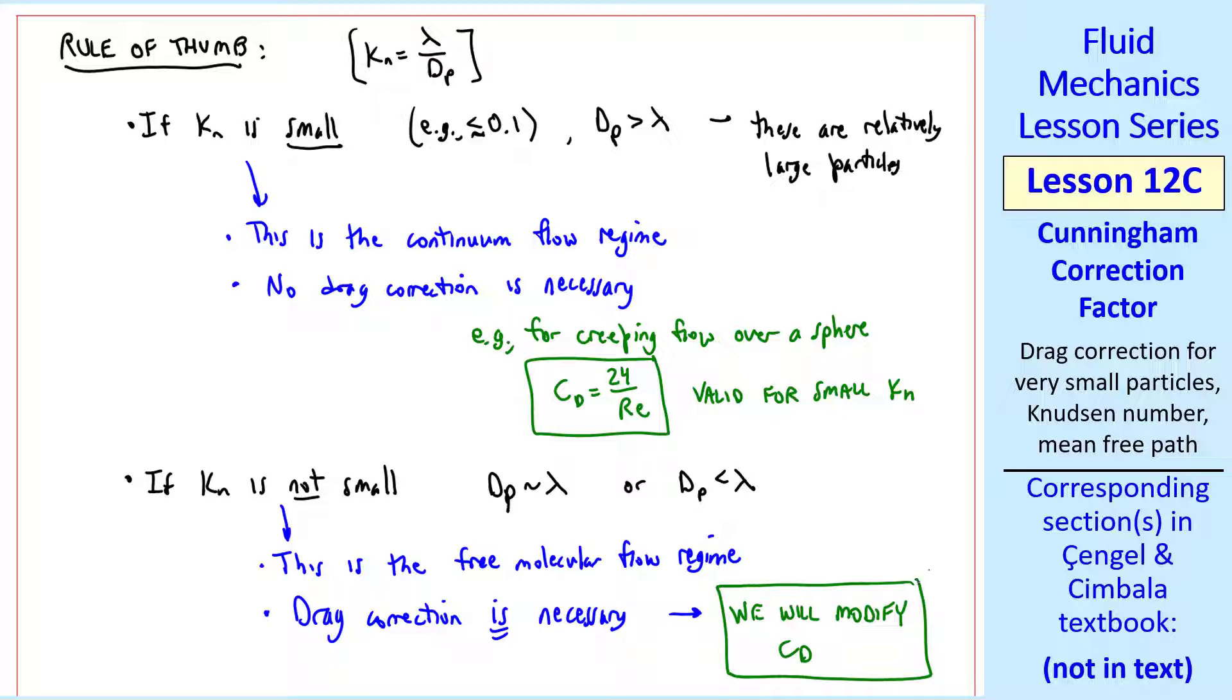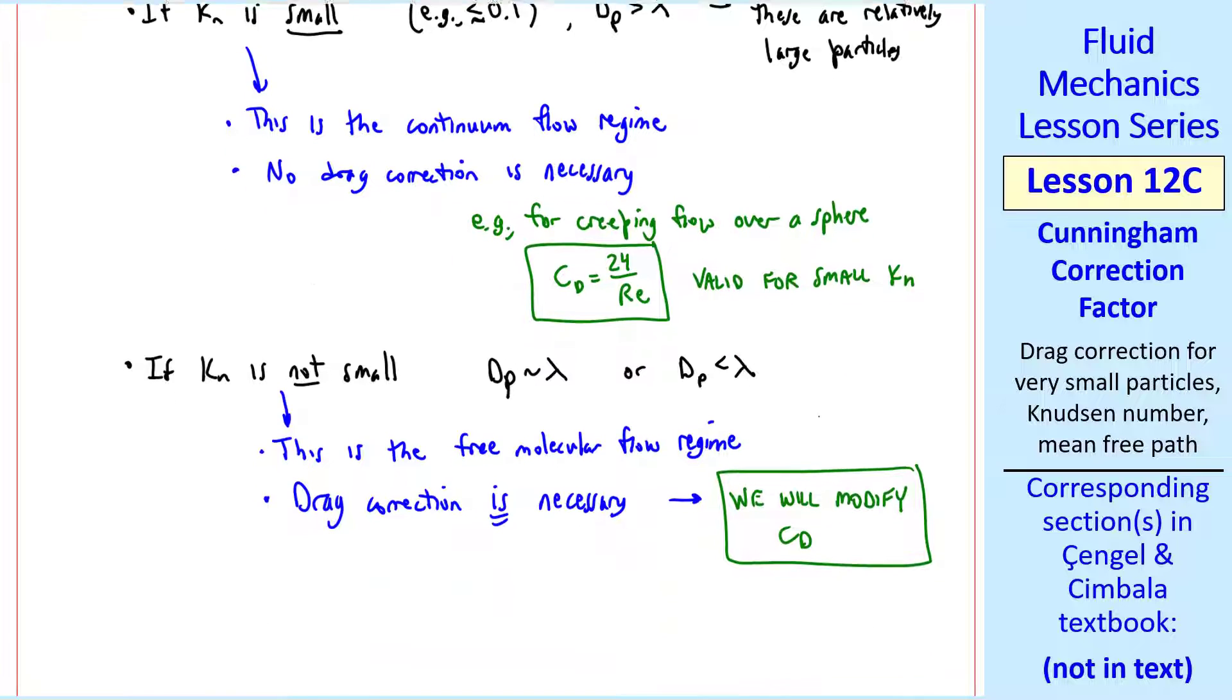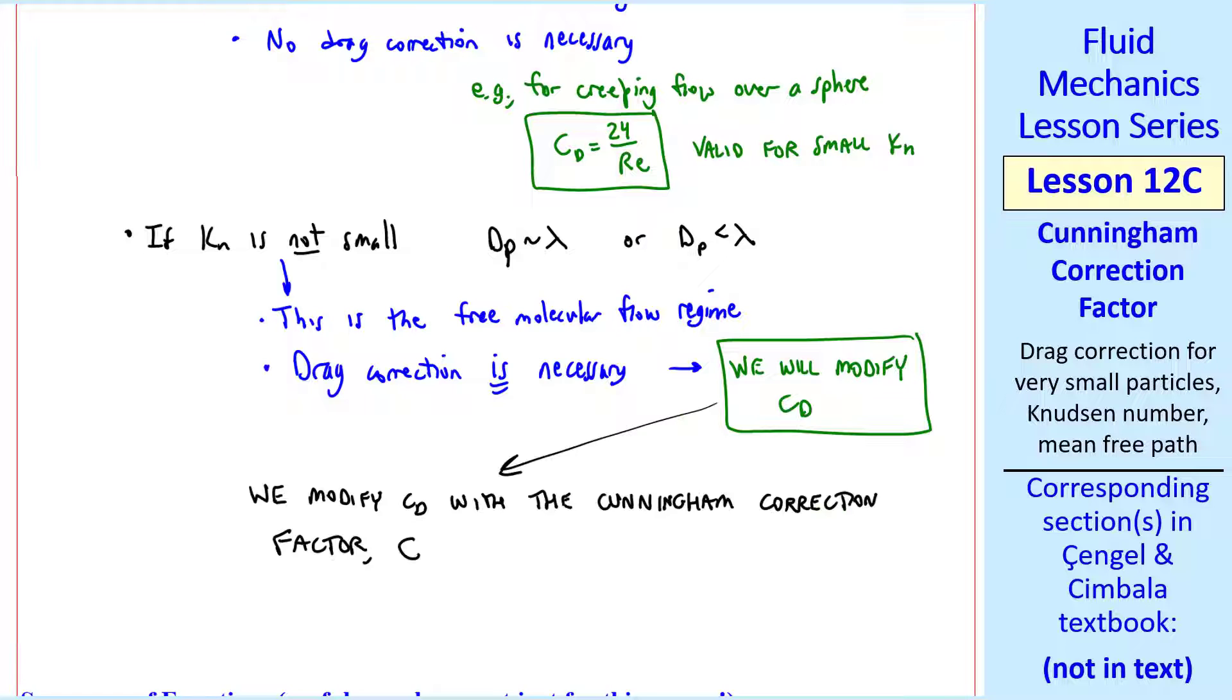We will have to modify cd. And as I said, we expect cd to be smaller. We do this modification with a correction factor called the Cunningham Correction Factor, given the symbol capital C. Namely, we use cd divided by C in place of cd.